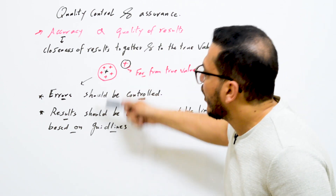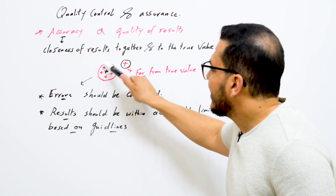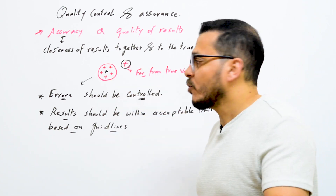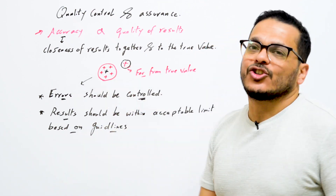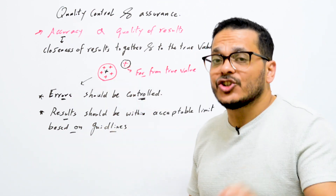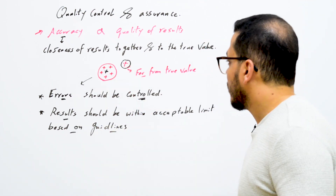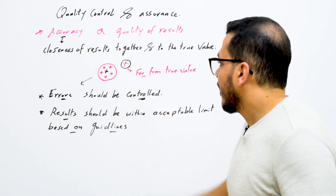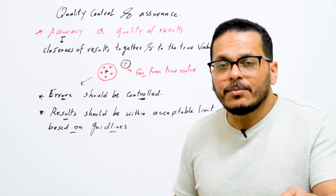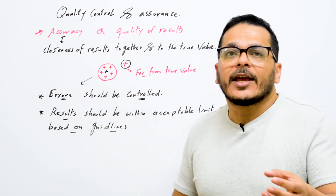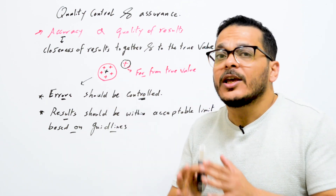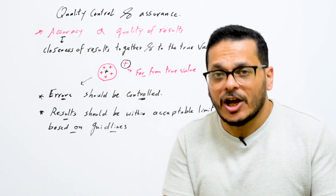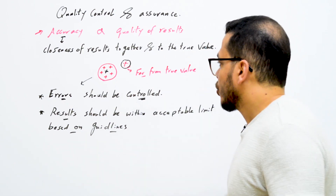In this graph, you'll find the true value or expected value. These results are accurate because they are close together and to the true value, within an acceptable range based on the guidelines used. But this result is far from the true value. If the expected value is 10 ppb and you get 9, 8, or 7 ppb, all of them should be within the acceptable range according to the guideline used.